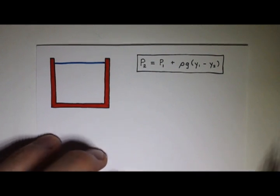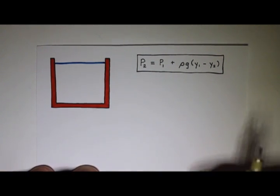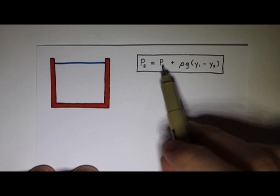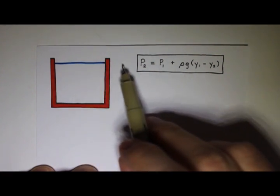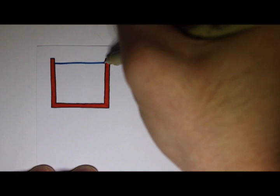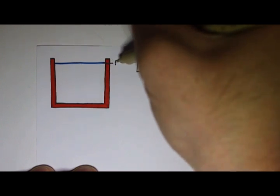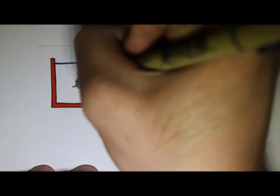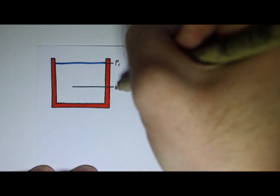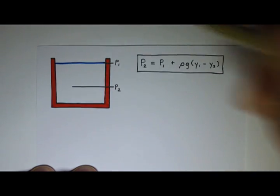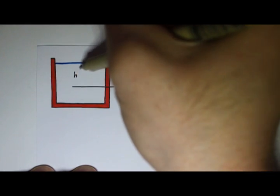I want to look at the special case where p1 is the pressure at the very top, the surface. So if this is p1, and then we have some other depth p2, and we'll say that this distance here is h.